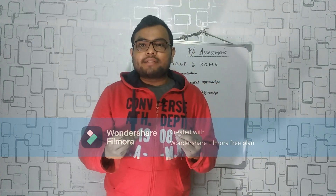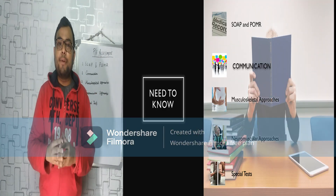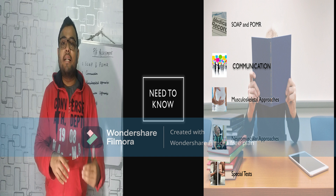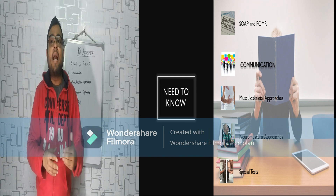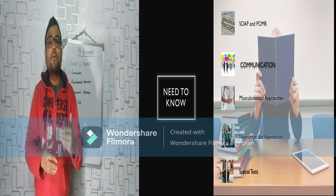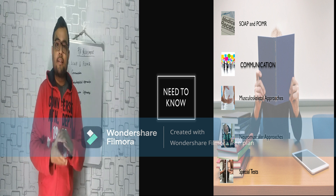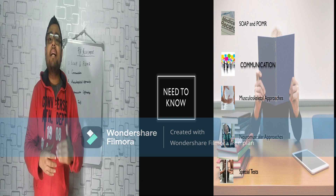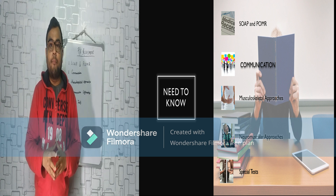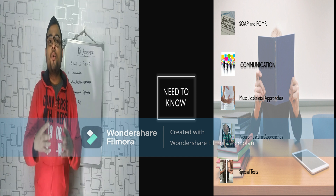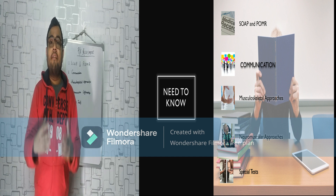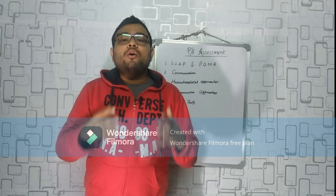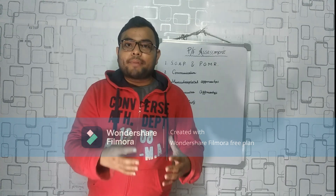In PF Assessment the main five topics are: first is SOAP and POMR, then you need to learn about communication, then you have to know the musculoskeletal approaches which are Cyriax, Maitland, and Mackenzie. Along with that you need to know the neural tension tests, then the neuromuscular approaches which includes global and MRP that is Motor Relearning Program, and special tests of every joint and important pathological conditions. We will discuss one by one which book is needed for which topic.